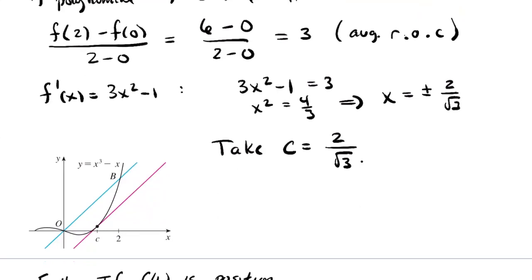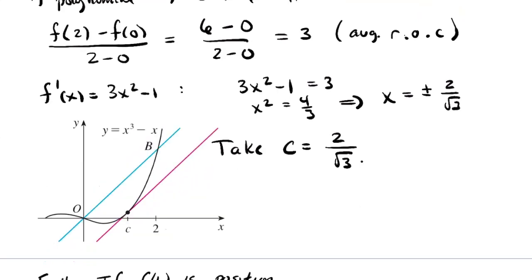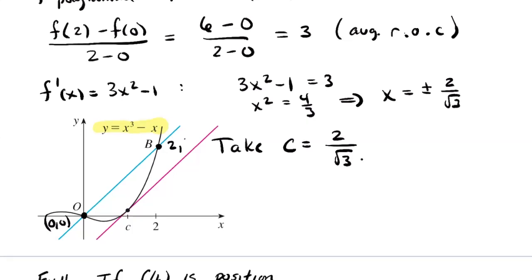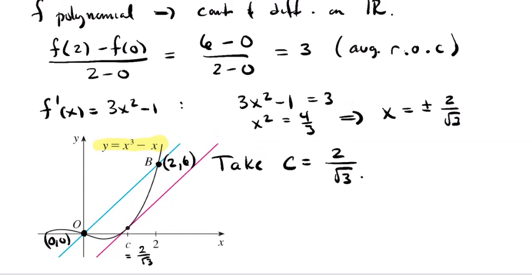Then f'(C) = 3, which equals our average rate of change. In the picture, the graph of x³ - x is drawn in black. The point O is (0, 0) and the point B is (2, 6), so the blue secant line has slope 3. At C = 2/√3, the tangent line is parallel to that secant line. The Mean Value Theorem says the instantaneous rate of change has to equal the average rate of change at least once.